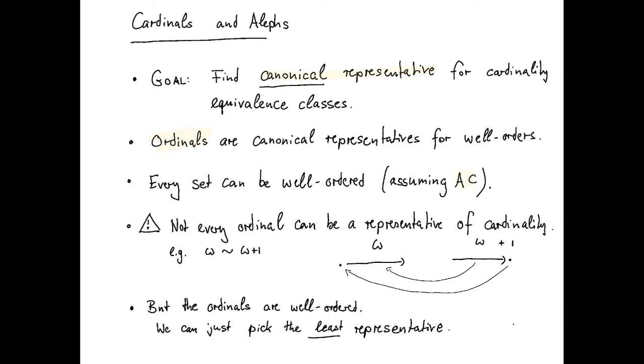We've also seen that if we assume the axiom of choice holds, which in turn is equivalent to the well-ordering principle, we see that every set can be well-ordered, meaning now that we can assign every set a well-ordering. That well-ordering, by the isomorphism theorem for well-orderings, is isomorphic to some ordinal.